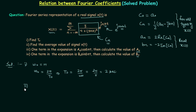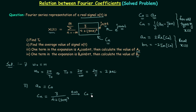Moving to the second part: the average value of the signal equals A0, and A0 equals C0. We can easily calculate C0 since we know Cn = 3 / (4 + 3nπ)². Putting n = 0 gives C0 = 3 / (4 + 0)² = 3/4. So 3/4 is the value of C0, which equals A0, which is the average value of signal x(t).